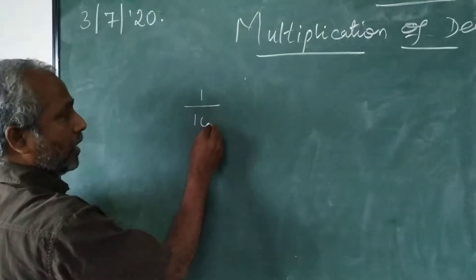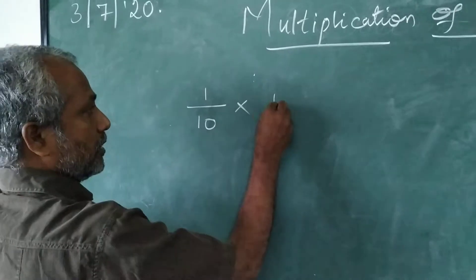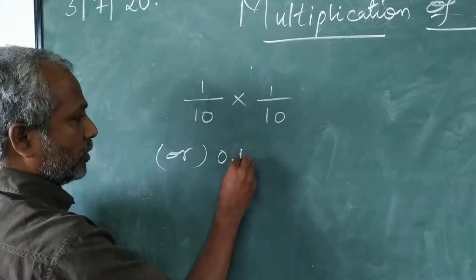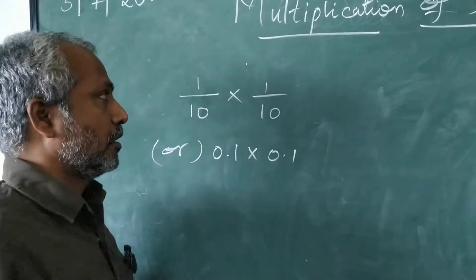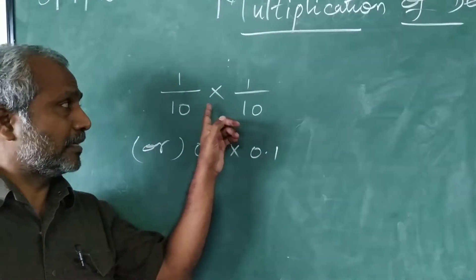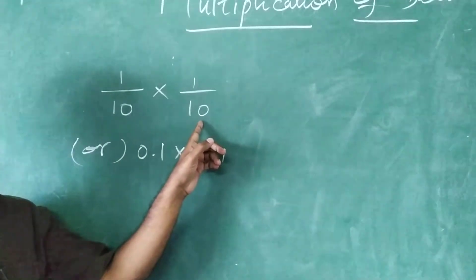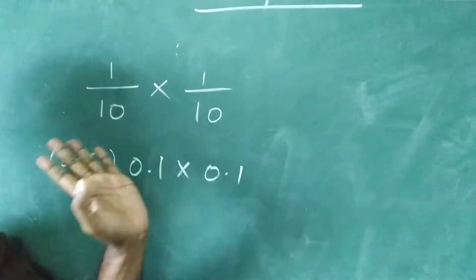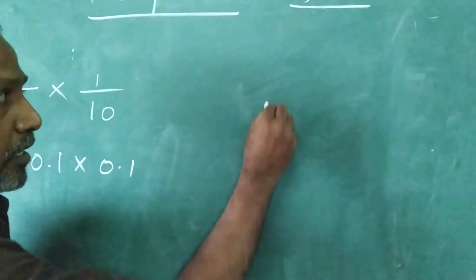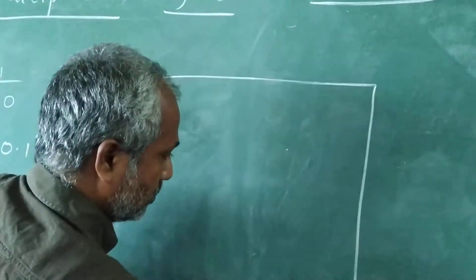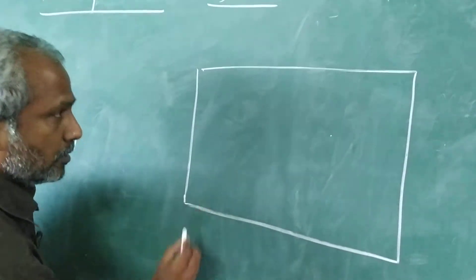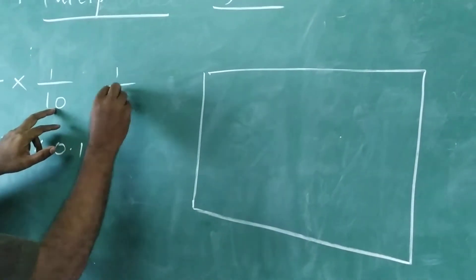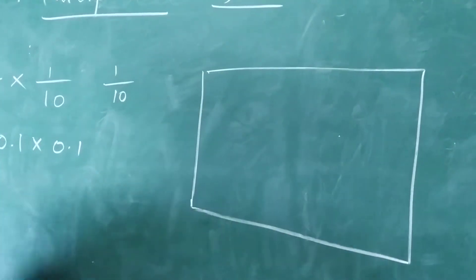First, I am considering 1 by 10 into 1 by 10. Otherwise, we can write it as 0.1 into 0.1. The meaning behind 1 by 10 into 1 by 10 is: first we have to take 1 whole part, and that whole part we divide into 10 equal parts.